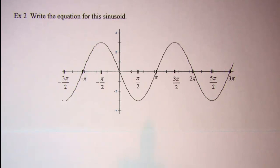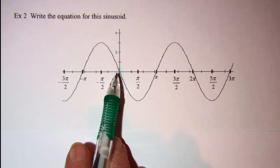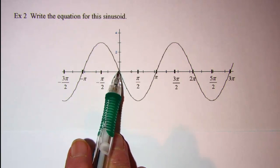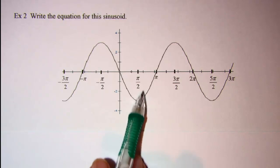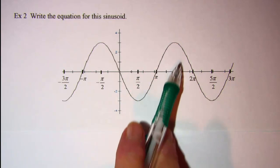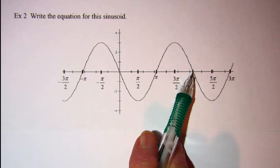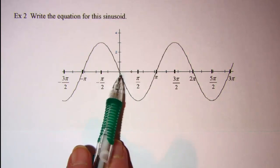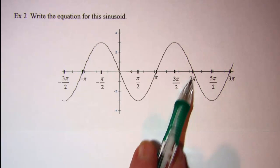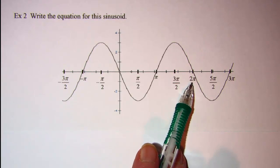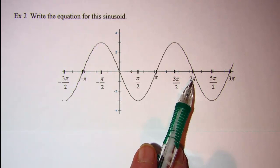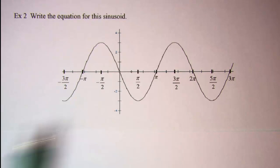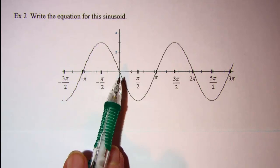Again we have a sinusoid. It starts at the origin but this time it heads down, and it does its entire curve or one period from 0 to 2 pi. Now we know 2 pi is the same as 360 degrees, so this has not been stretched horizontally at all. The only thing that's changed is the amplitude.